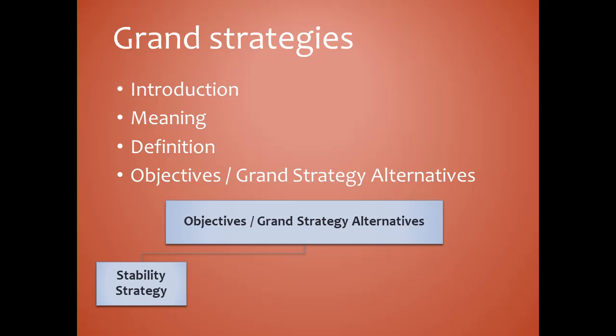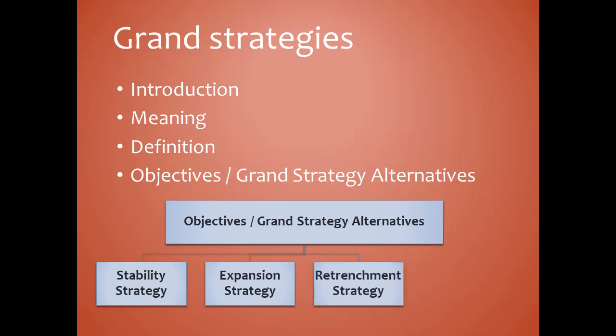The next one is expansion strategy. It is the most widely pursued corporate strategy. Companies that do business in expanding industries must grow to survive. A company can grow internally by expanding its operations, or it can grow externally through mergers, acquisitions, joint ventures, and strategic alliances.